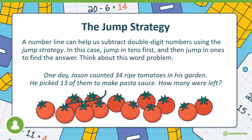Think about this word problem. One day Jason counted 34 ripe tomatoes in his garden. He picked 13 of them to make pasta sauce. How many were left? Remember we have to circle our numbers first. Our larger number is 34, our smaller number is 13. We have to underline our question — 'How many were left?' — and box any keywords.